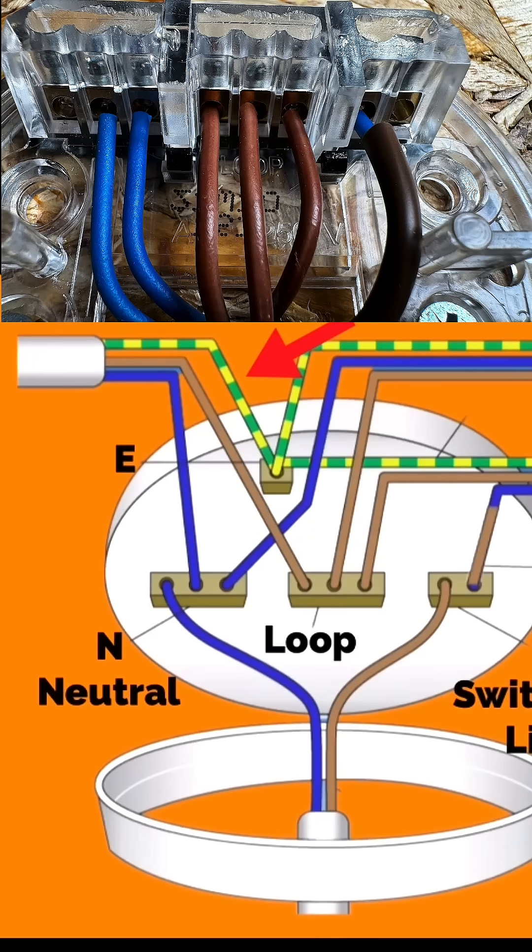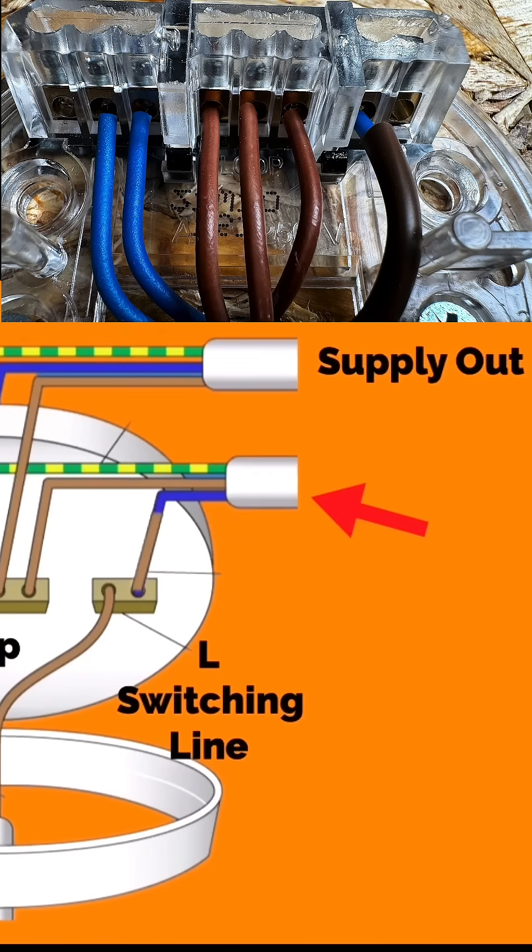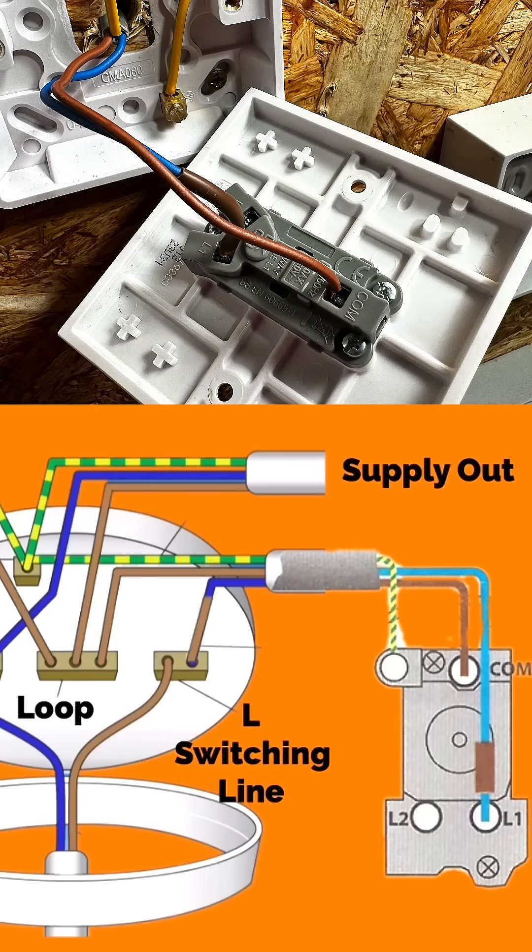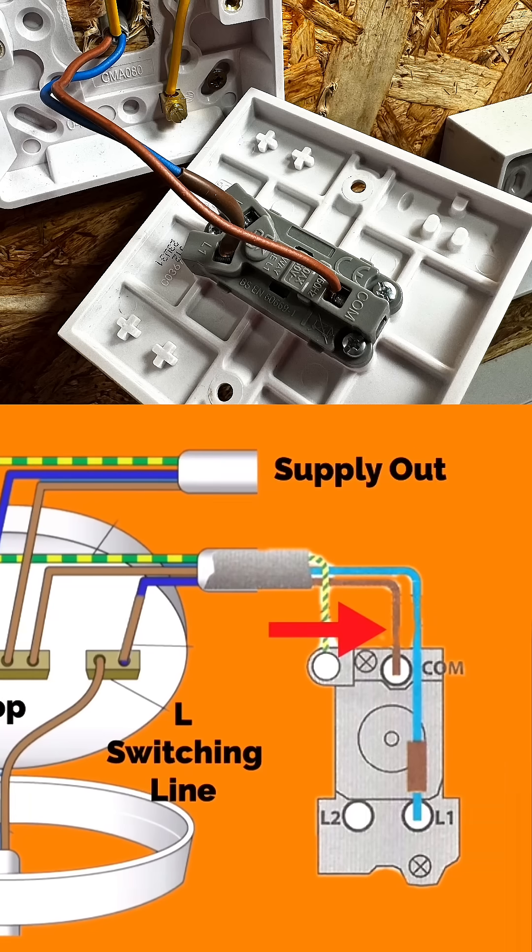The bottom right-hand cable is a switch drop. If we see that the switch is, say, a one-way switch, we take a permanent line from the looping terminal in the centre and it goes down to the one-way switch connected into the common terminal. We have a switching line conductor returning.